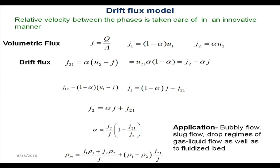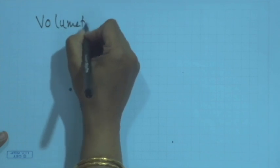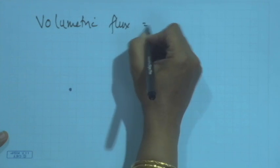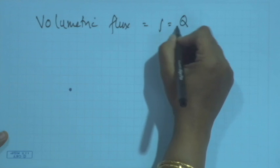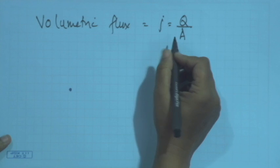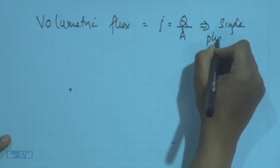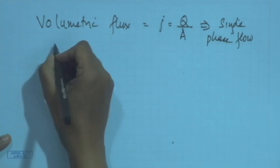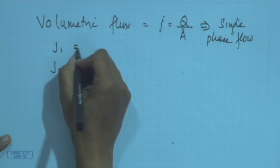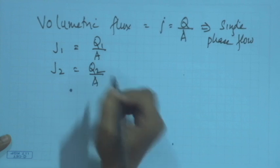In order to understand the drift flux model we would first like to define what a drift flux is. If you remember in the nomenclature we had defined the volumetric flux — it is nothing but the volumetric flow rate per unit area, usually defined as j for single-phase flows. In two-phase flows we have j1 and j2, where j1 = Q1/A and j2 = Q2/A.